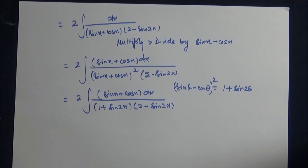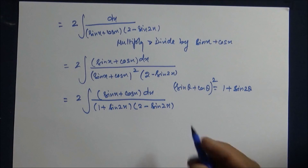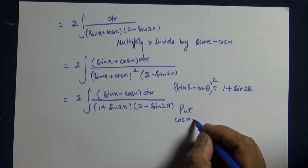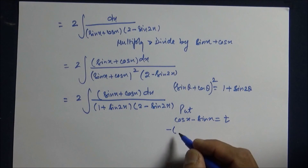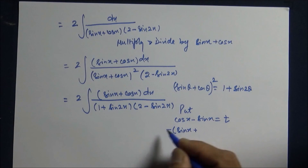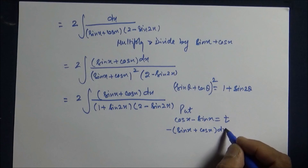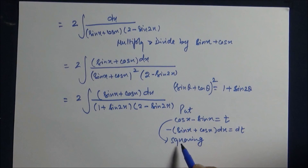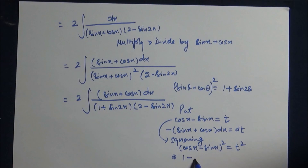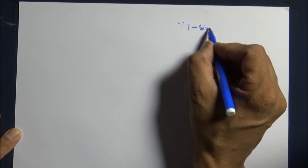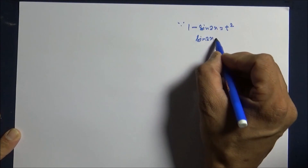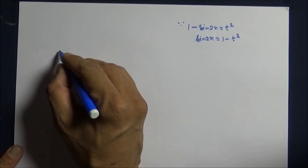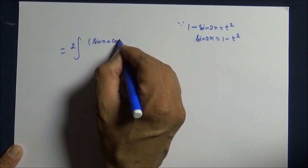So what will happen with this? Now comes a hidden substitution and this is another catch. Put cos x minus sin x as t, with that minus sin x minus cos x dx becomes dt — taking minus common. Do squaring here: cos x minus sin x the whole square is t square, so this is 1 minus sin 2x equals t square.